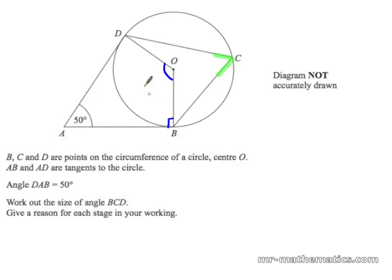The angle between the tangent and the radius are both 90 degrees. We mark off our radii and you can see that ABOD is a quadrilateral.